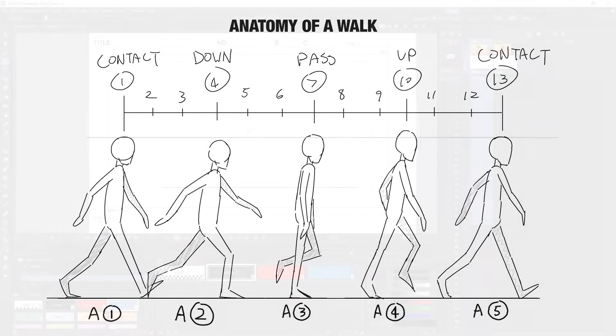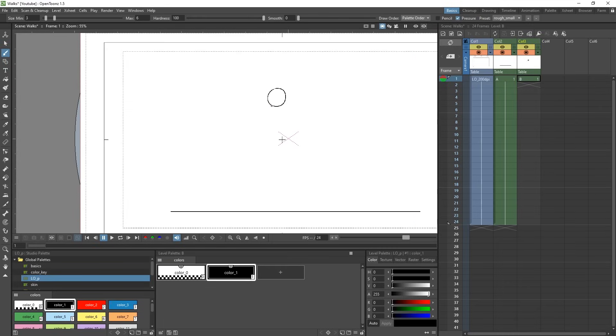A basic walk has 4 unique positions that are then repeated with the legs swapped. First, we have the contact position, called so because both feet are touching the ground. The hands are splayed out in the opposite pattern of the legs, so if the right leg is forward, then the left arm is forward. I'll use a basic animator stick man like the ones that Richard Williams draws since that was first how I learned to animate walks.